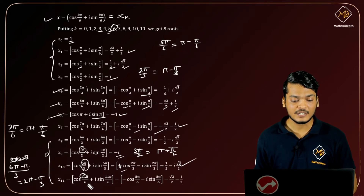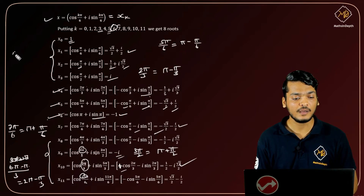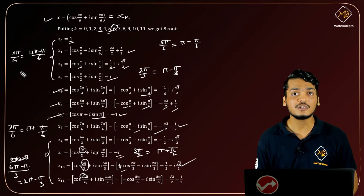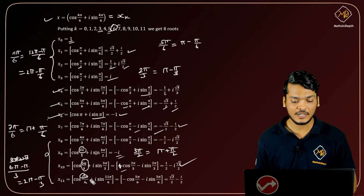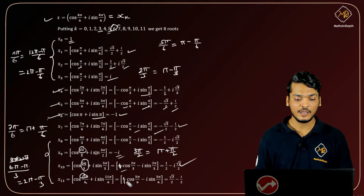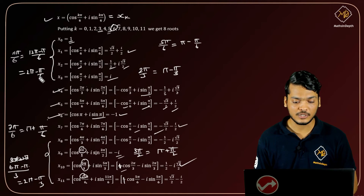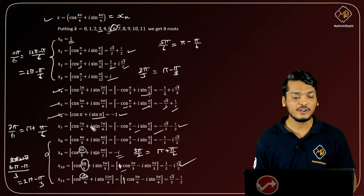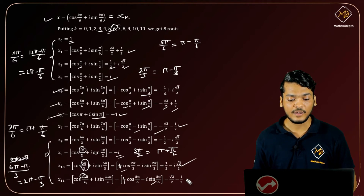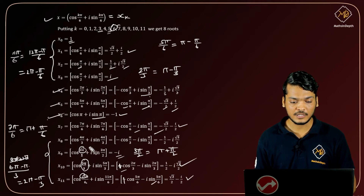For 11π/6: write 11 as a multiple of 6 — so 11π/6 = 12π/6 - π/6 = 2π - π/6. Now cos(2π - θ) = cos(θ), so cos(2π - π/6) = cos(π/6). And sin(2π - π/6) = -sin(π/6).